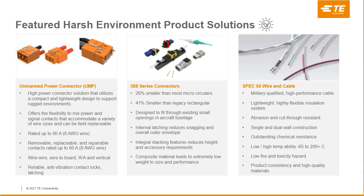There are several products that already exist and have been created almost purpose-built for drones. The first is the unmanned power connector. These drones are typically run by battery — though they can also be run by gasoline or other fuels. Right now there is a small number of connectors on the market that go up to 80 amps, and this is one of them. The higher current and voltages you can run, the more efficient your design can be. This is a connector system that mixes both signal and power to control the rotors, and we have wire-to-wire, wire-to-board, right angle and vertical configurations. This is a new product launched this year specifically for the drone market.